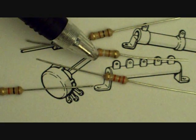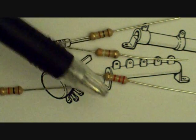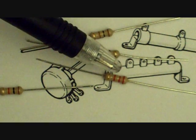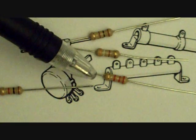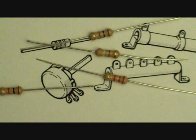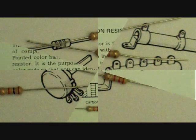Here we see orange, white, brown, and over here red, red, red with a tolerance band. So let's go and see how we read this color code.